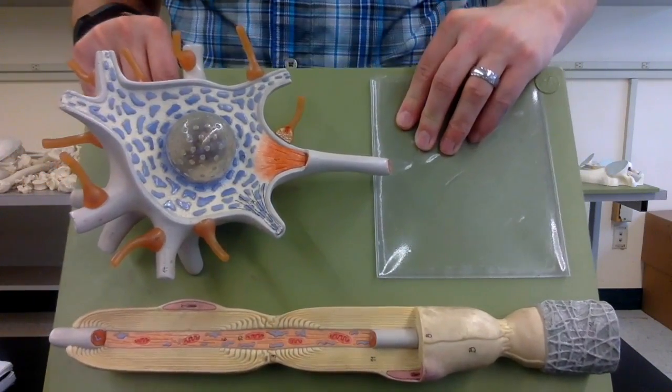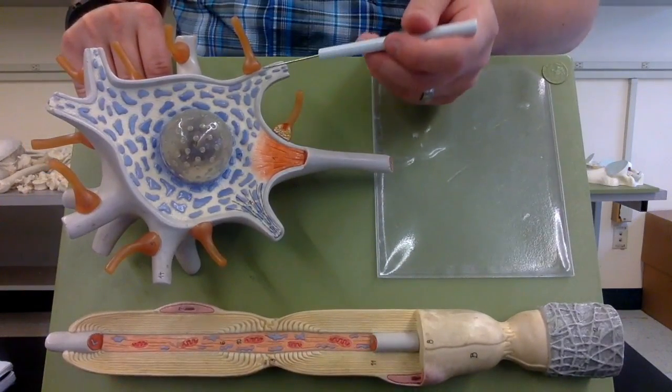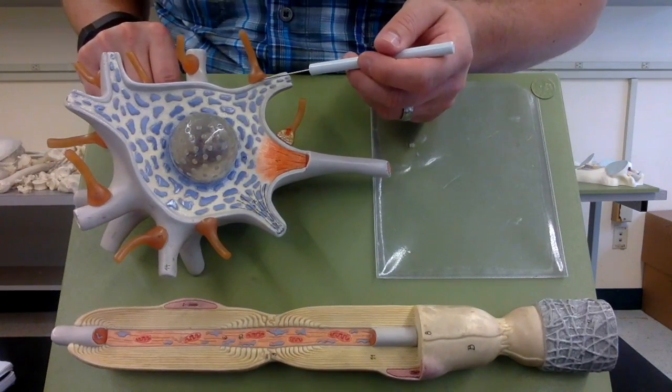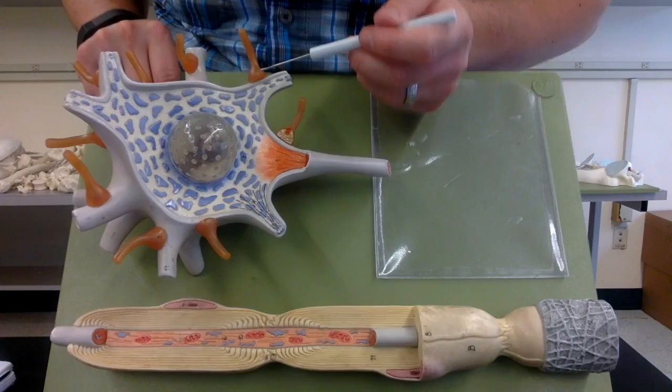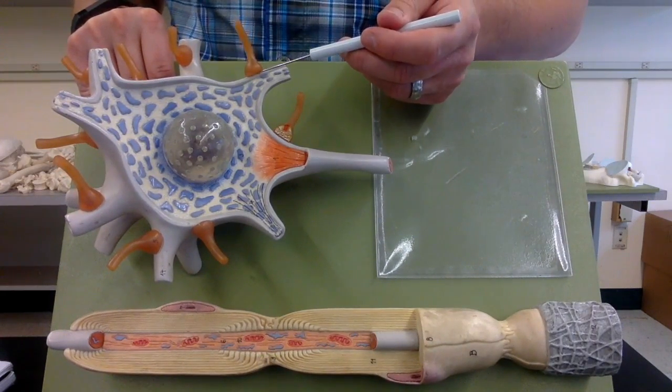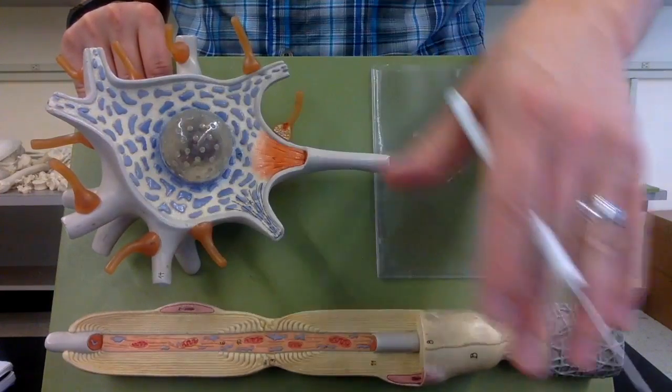So in lecture I'm sure you'll go over this. There's actually a microscopic little area between the synaptic knob and the dendrite, and it's called the synaptic cleft. And that's where the neurotransmitter is actually projected across.